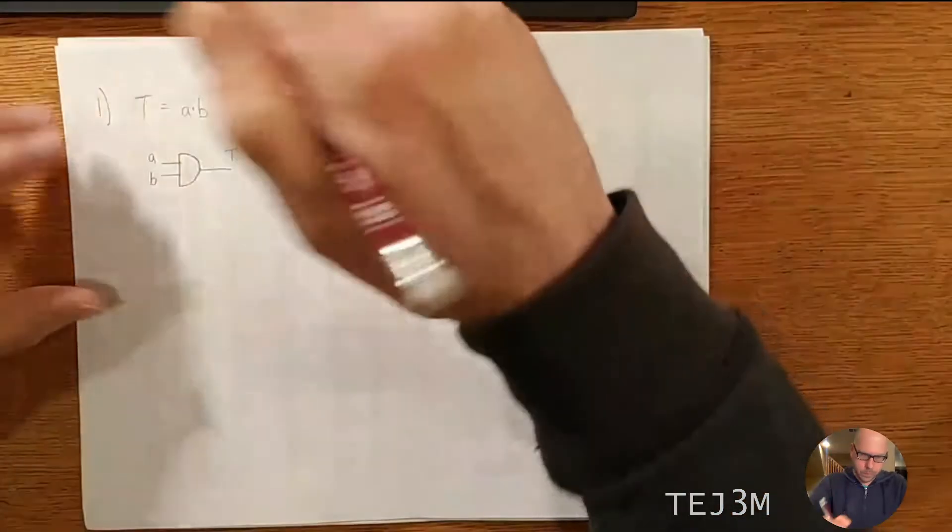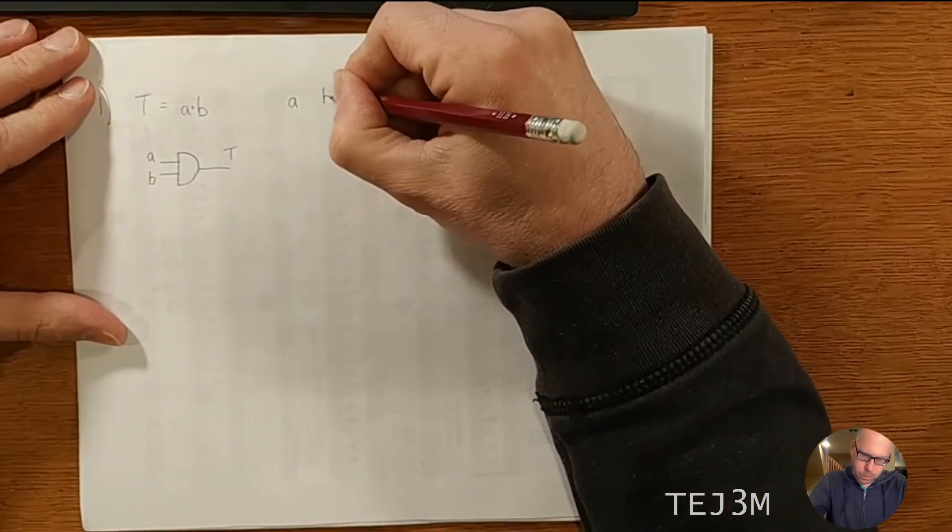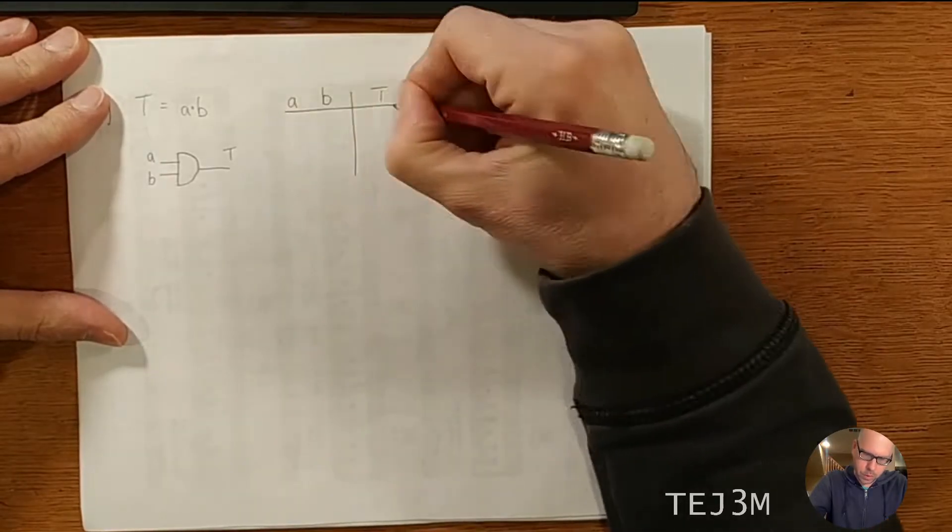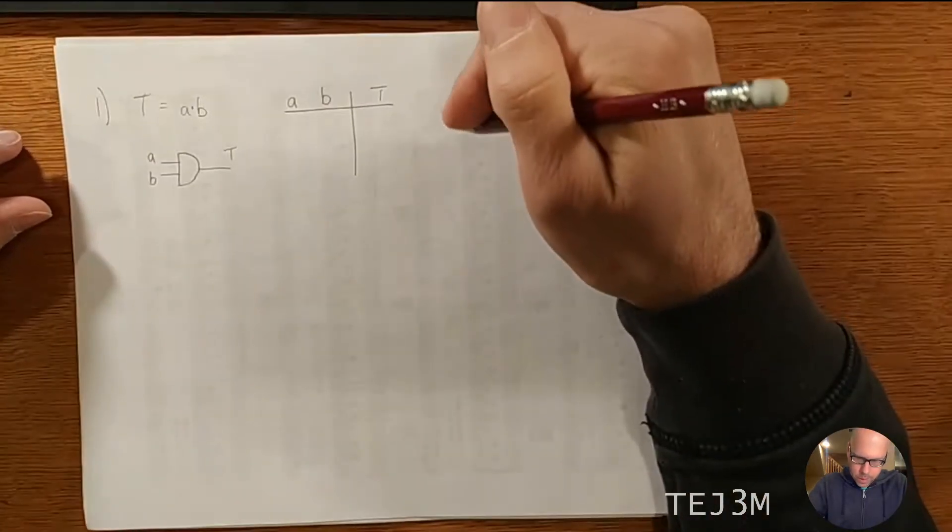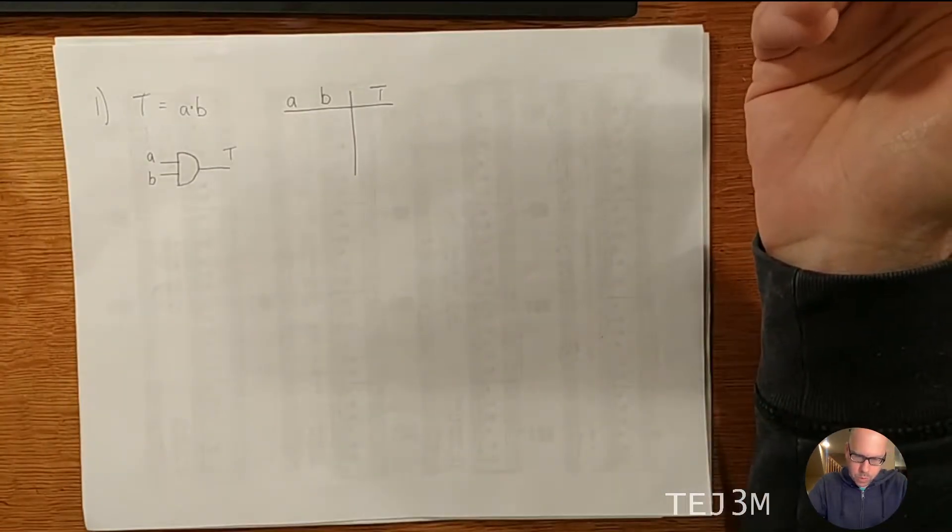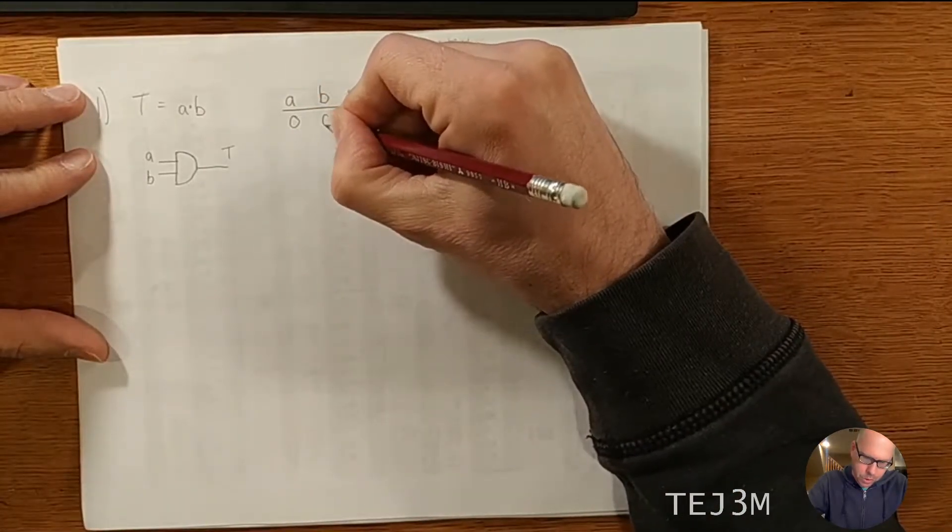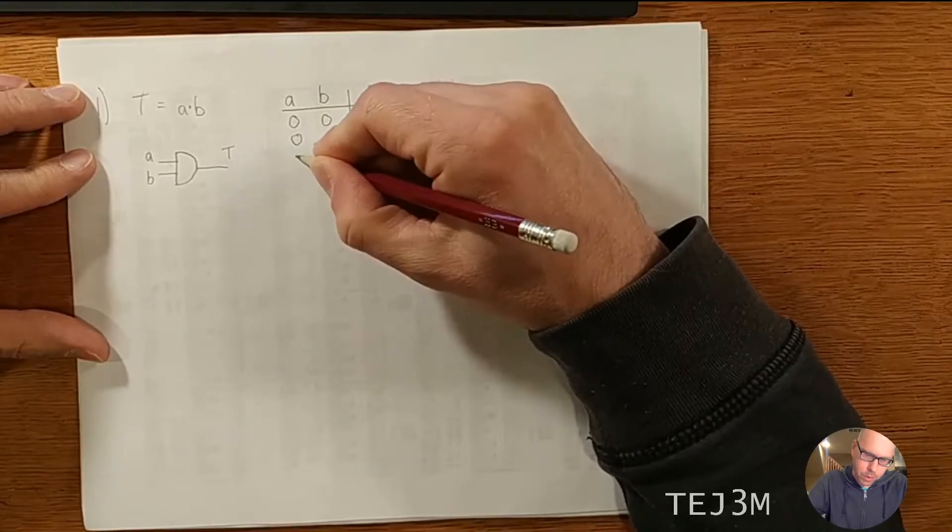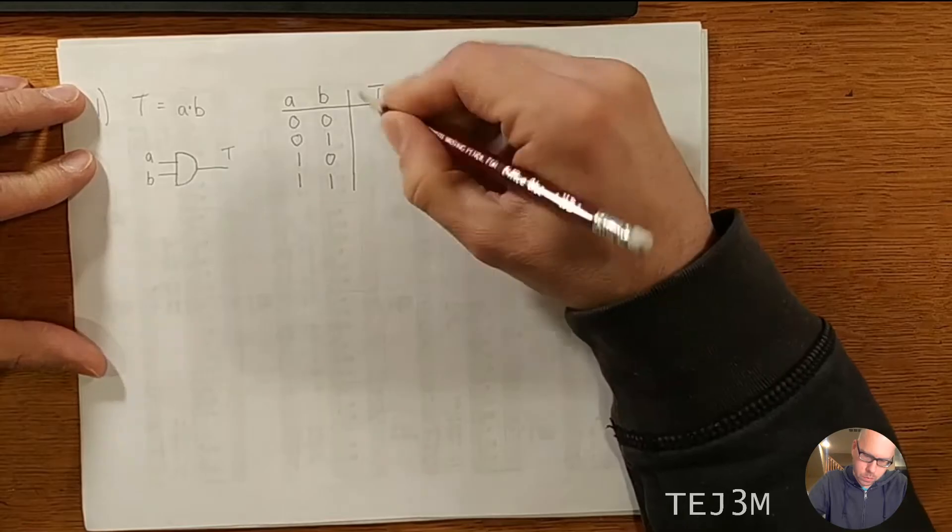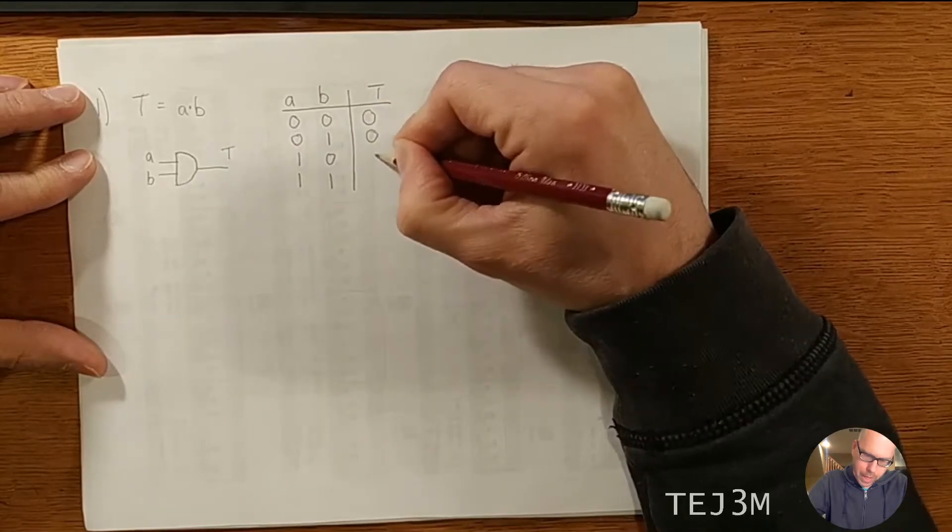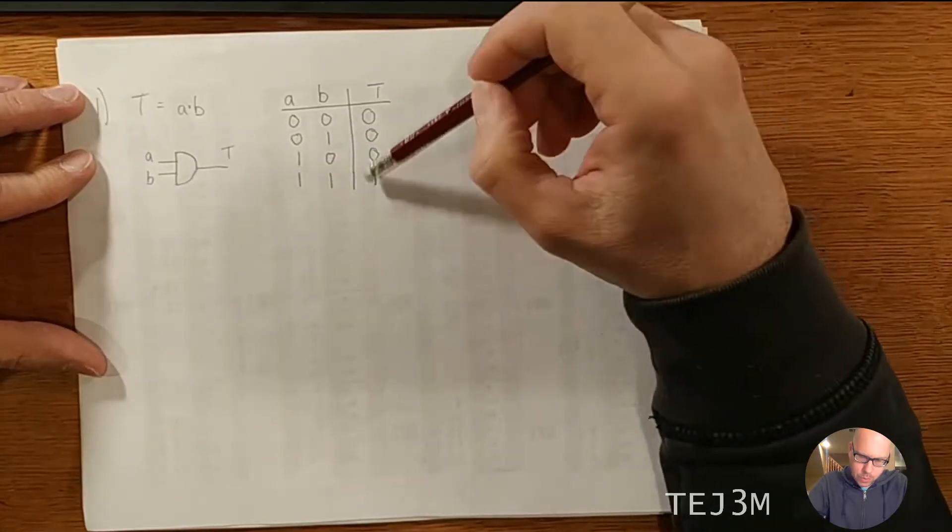So there's your diagram and for the truth table, well we have our two inputs and then we have our output T. Whenever there's two inputs, we're always going to have four combinations and they should go in the same order as the binary numbers that we learned in unit one. So here's the order that they go in. And this is just the AND gate. The only time you get a one is if both inputs are a one.